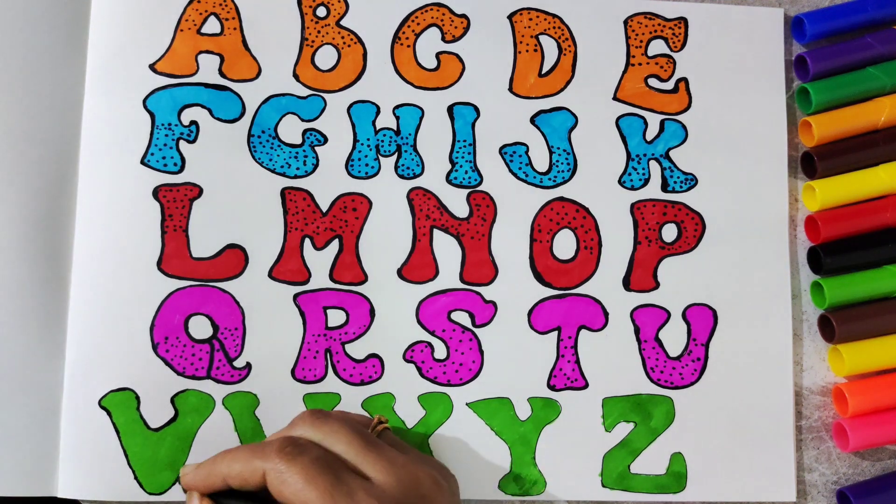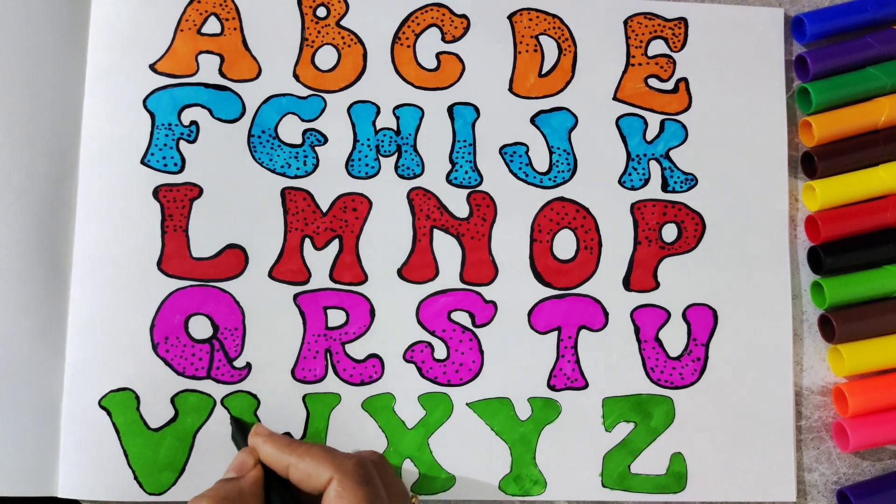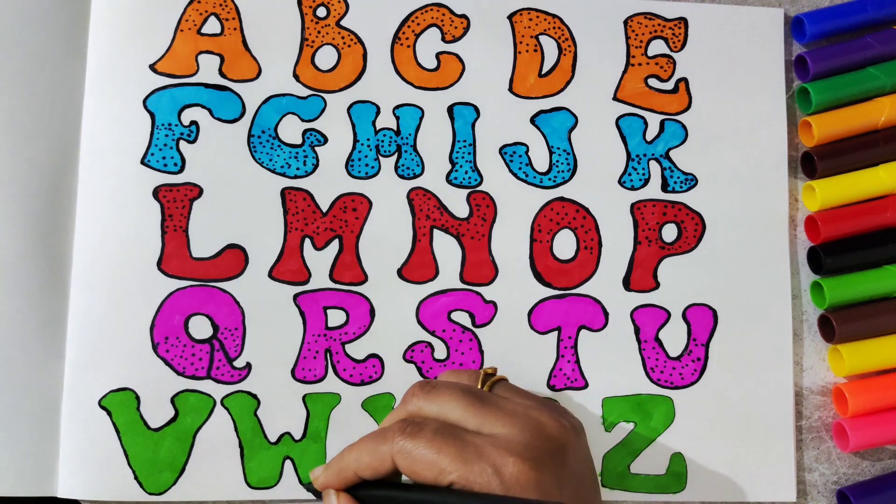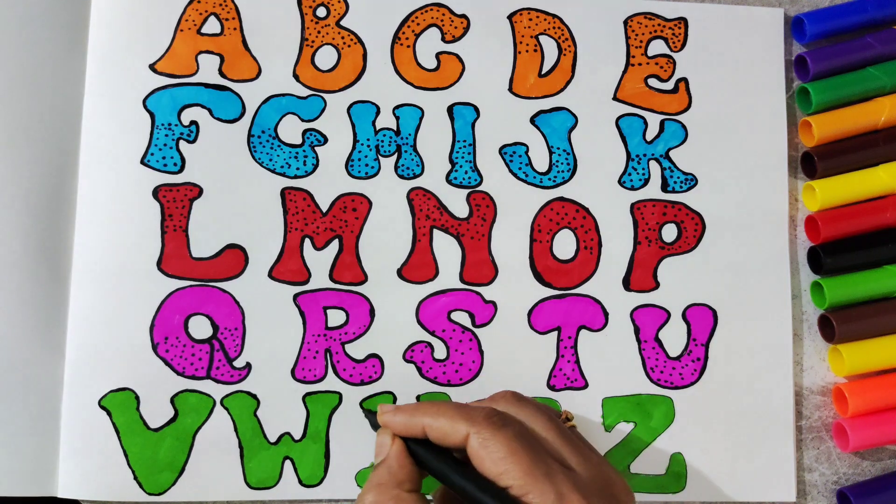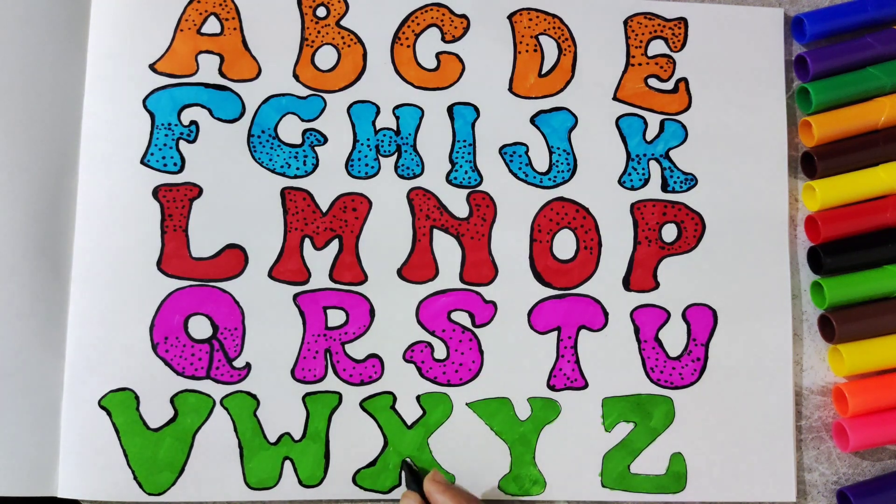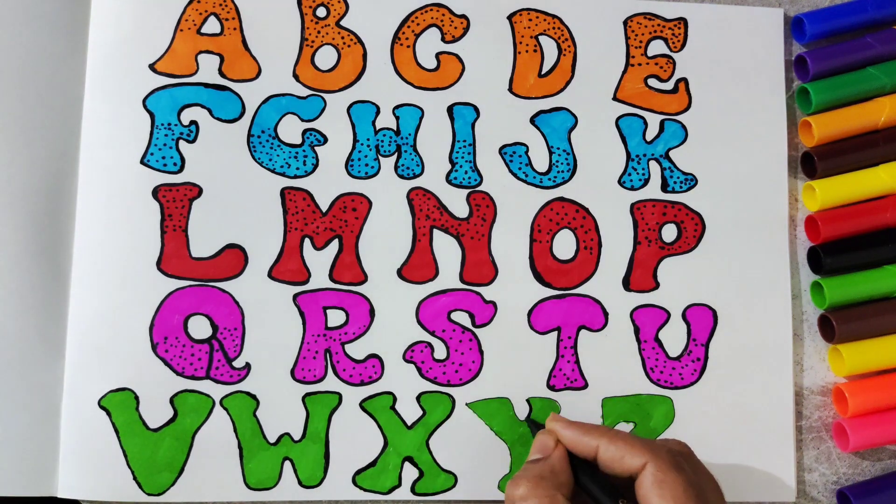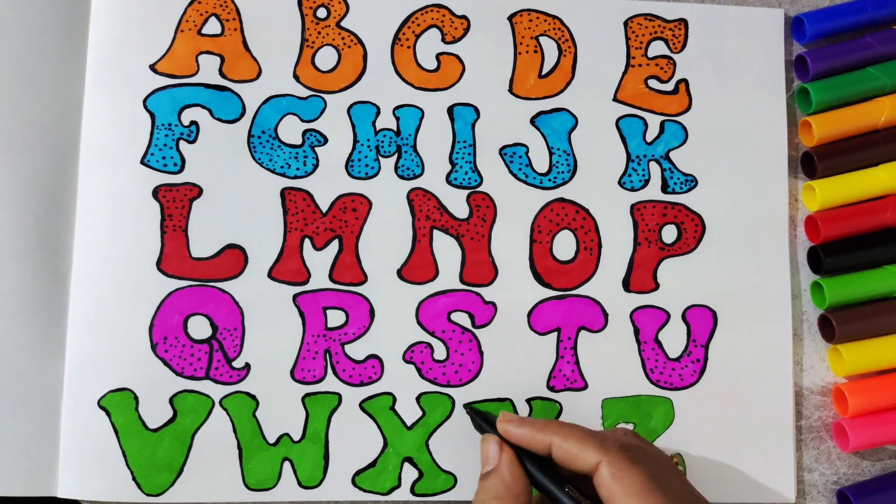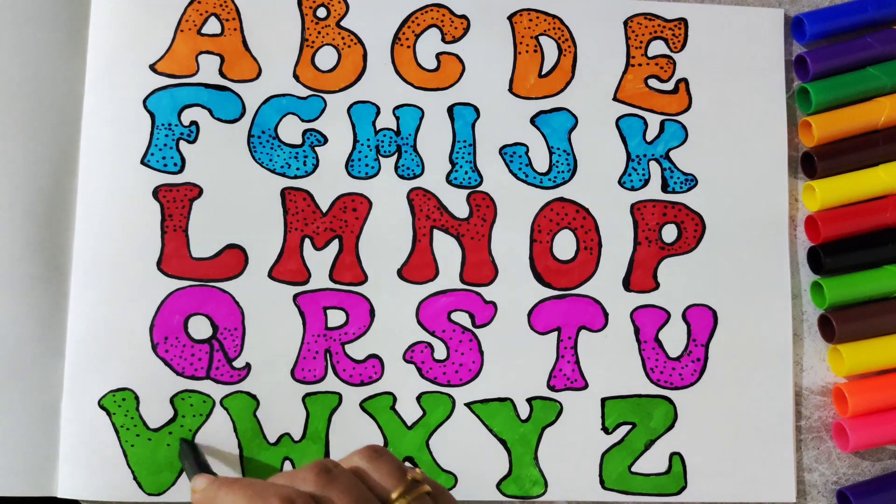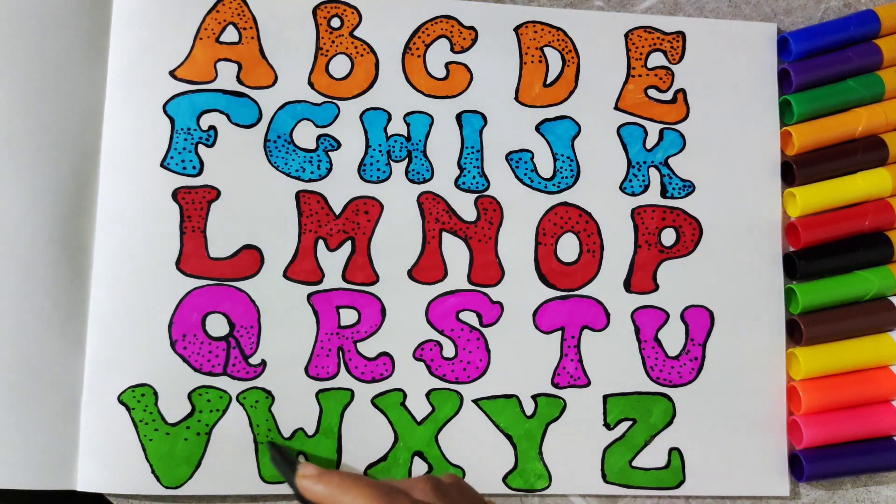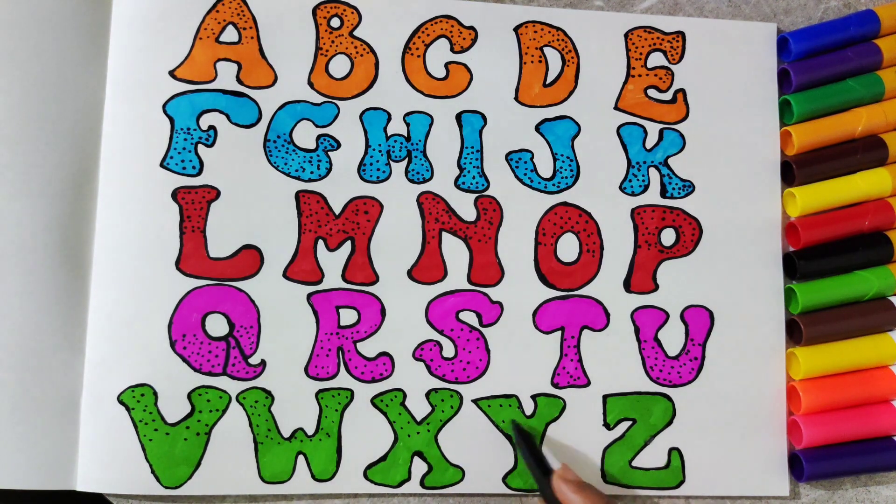Let's start giving them border with black sketch pen to make them more highlighted. We will do it for all the letters. Now let's start making the pattern on them. Yes, we will give a dot pattern. Dot pattern is looking very good, beautiful on these alphabets.